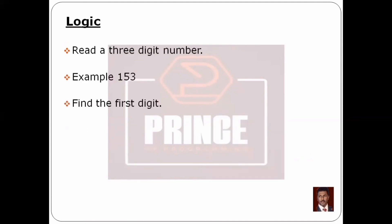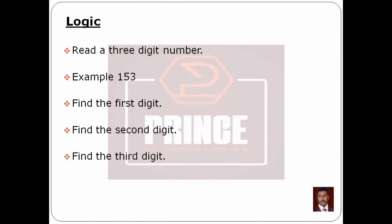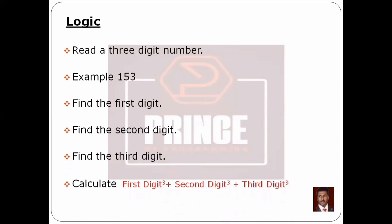In this program, we read a 3-digit number. We separate the first digit, second digit, and third digit. Then we compute the cubes and sum them. If that value equals the original number, we check accordingly using an expression.